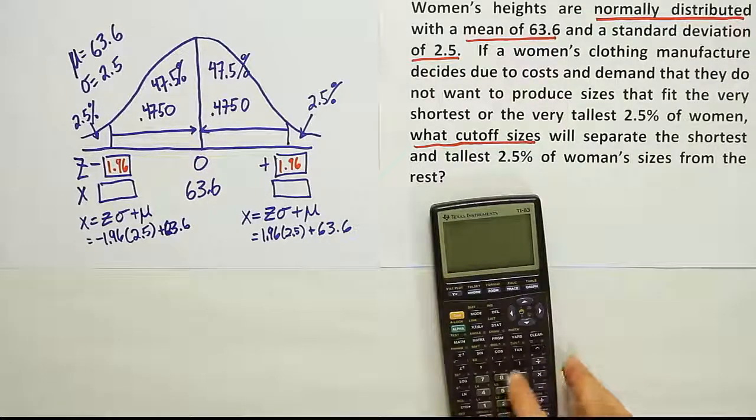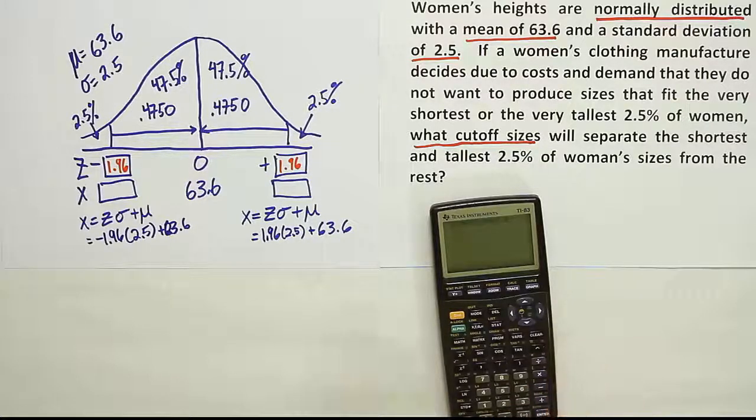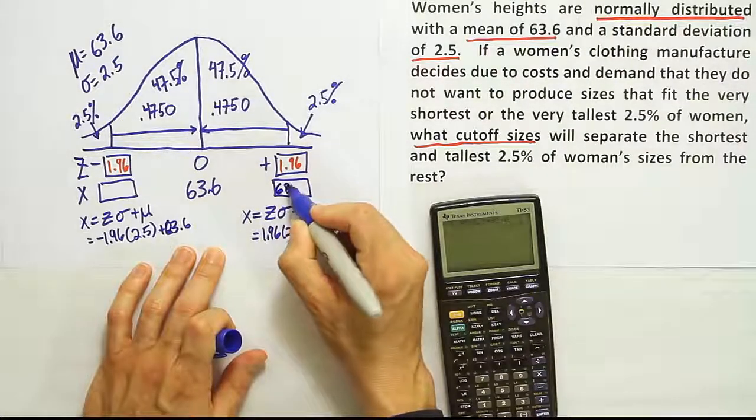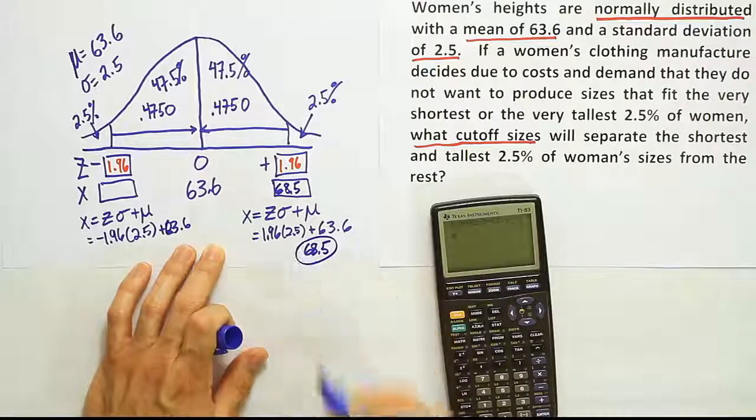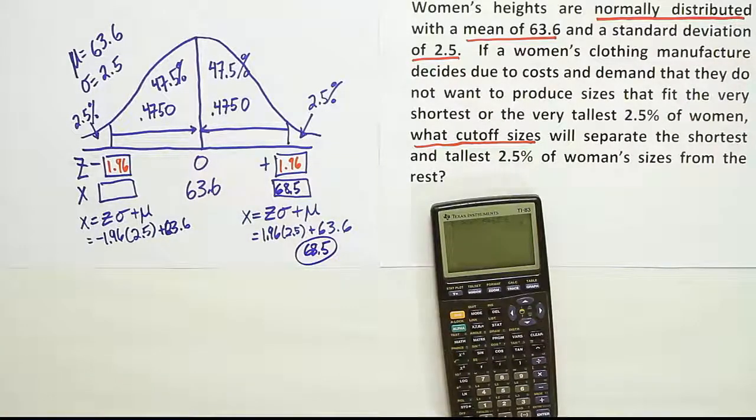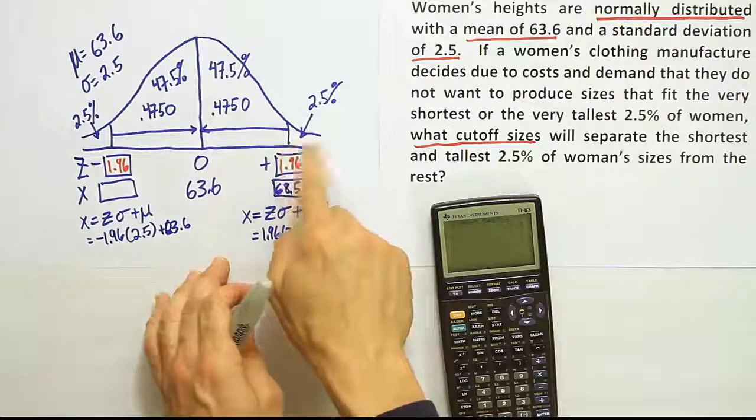So 1.96 times 2.5 plus 63.6, you want to get that answer? It's 68.5. 68.5 inches. It's about five foot eight or nine, between five foot eight and nine. Remember, 60 inches is five foot. So eight and a half inches more than that. So five foot eight and a half is basically the cutoff score for the tallest 2.5% of women.